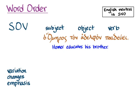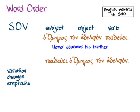So if we make it 'paideue ho Homeros ton adelphon,' the implication is that the first word is more important in some way — we're stressing it. So: 'Homer educates his brother.' That's really what he's doing — he's educating his brother. Or perhaps it answers the question, 'What's Homer doing? Homer educates his brother.'